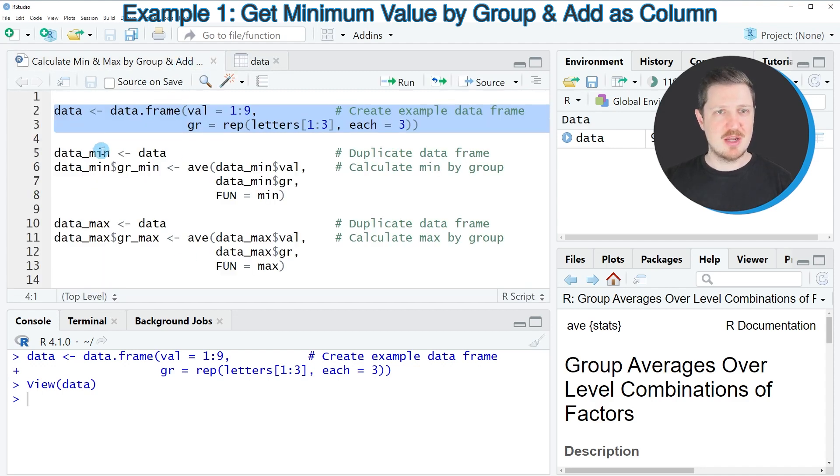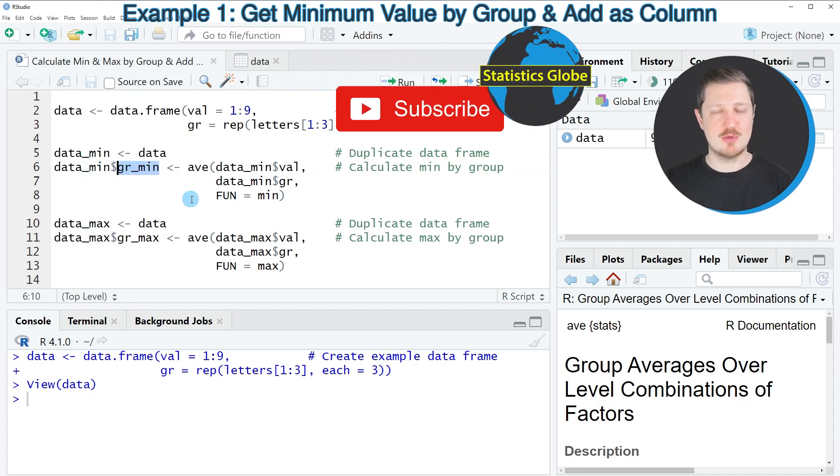Then we can apply the code that you can see in lines 5 to 8. So in these lines I'm calculating the minimum value by group and I'm doing that using the AVE function and I'm adding the output of the AVE function as a new column to our data frame.